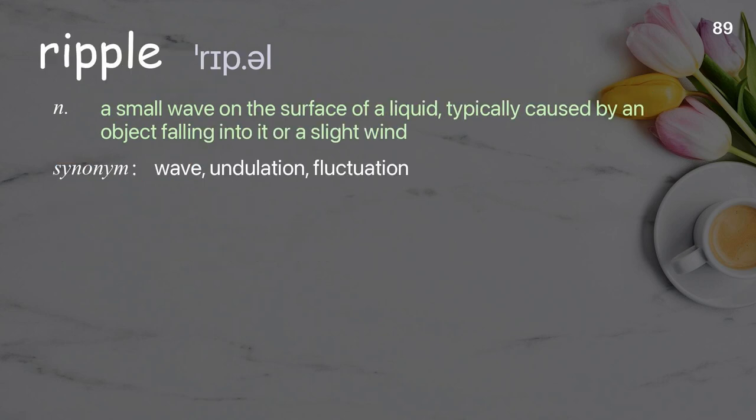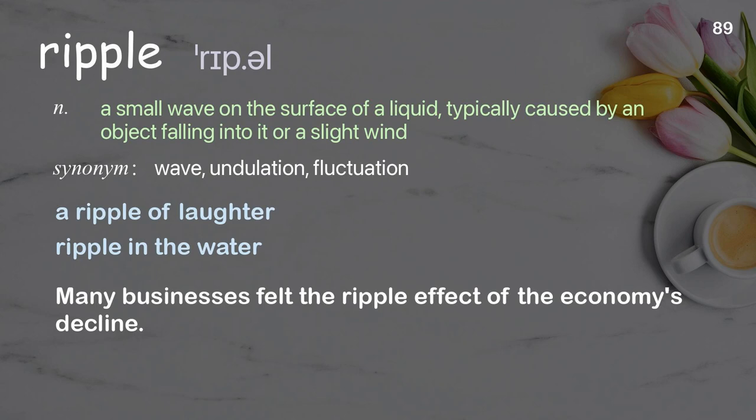Ripple: a small wave on the surface of a liquid, typically caused by an object falling into it or a slight wind. Examples: a ripple of laughter, ripple in the water. Many businesses felt the ripple effect of the economy's decline.